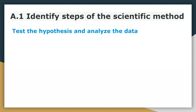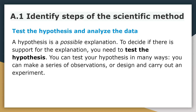Part three, you have to test the hypothesis. A hypothesis is a possible explanation. To decide if there is support for the explanation, you need to test the hypothesis. You can test your hypothesis in many ways — you can make a series of observations or design and carry out an experiment. In this phase, all you're doing is trying to figure out ways to prove that you're right.